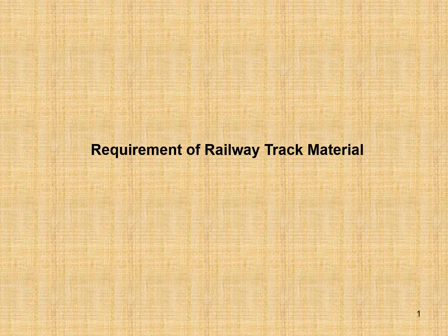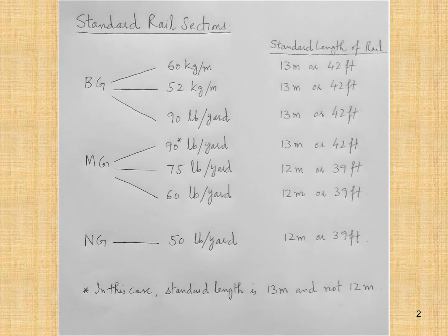Now we are going to discuss different topics: requirement of track material, signaling, and railway systems. Let's start from the requirement of railway track material. There are different standard rail sections.